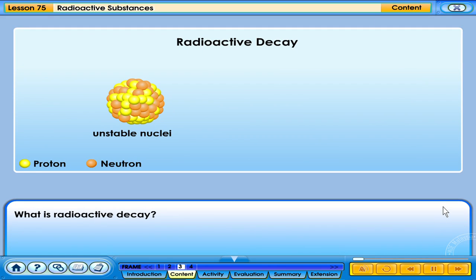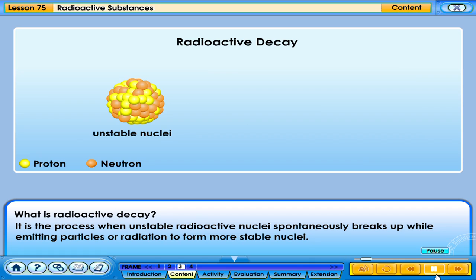What is radioactive decay? Radioactive decay is a process when an unstable radioactive nucleus spontaneously breaks up while emitting particles or radiation to form more stable nuclei.